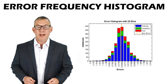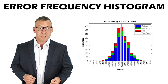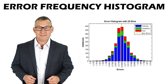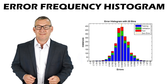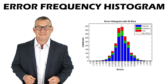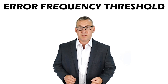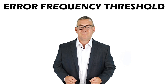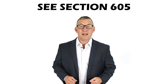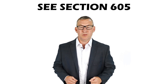An Error Frequency Histogram summarizes spatial data error. The graph indicates the smallest and largest errors and the mean and most common errors. An Error Frequency Histogram is a bar chart of range frequencies. An Error Frequency Threshold is a value that a specified portion of the errors occur above or below. See Section 605, Descriptive and Spatial Statistics, for more about accuracy statistics and Error Frequency Thresholds.